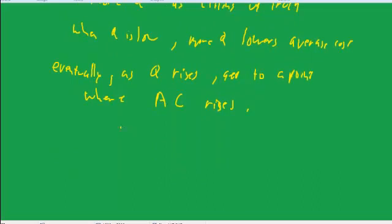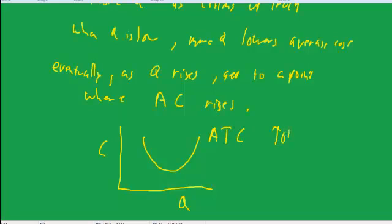So that's where we get what's called the U-shaped average. A U-shaped average. It's called average total cost. Total includes fixed cost, which in this case would be the cost of having a truck, and variable cost.